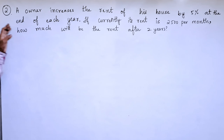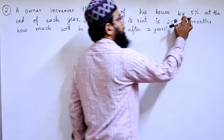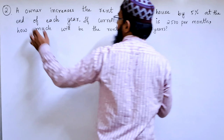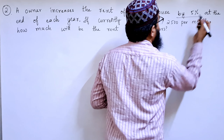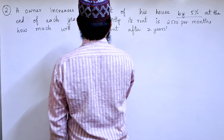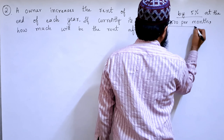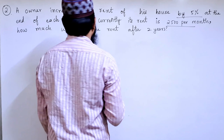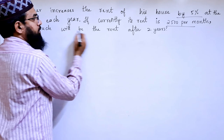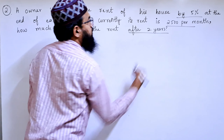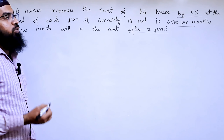Second problem: a house owner increases the rent of his house by 5% at the end of each year. If currently the rent is ₹2,500 per month, how much will be the rent after two years? So we need to find out the rent after two years.